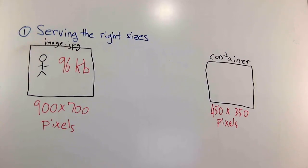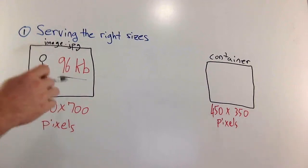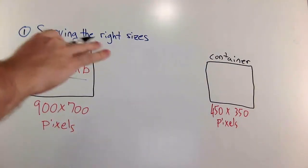Now on your page, maybe you have a mobile user or a tablet user going to one of your pages, and the container holding this image is only about half of the size. It's 450 by 350 pixels. Now even if you're resizing it with CSS, you're still passing the 96 kilobytes across the wire. Those 96 kilobytes are going to have to be downloaded before the user can see that image in the container.